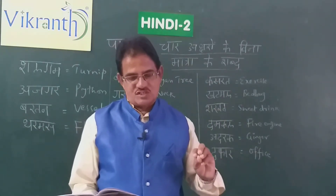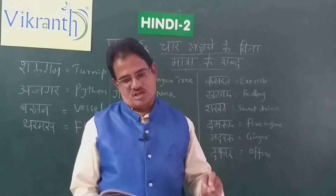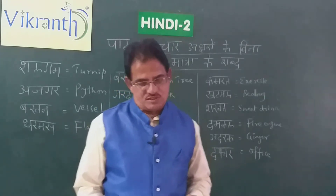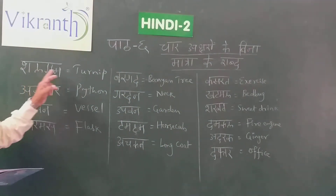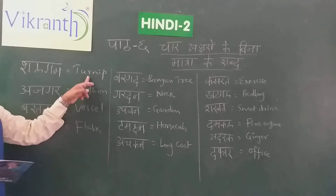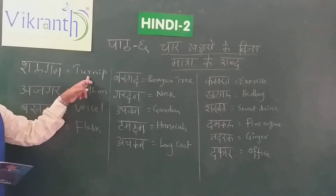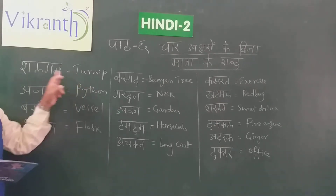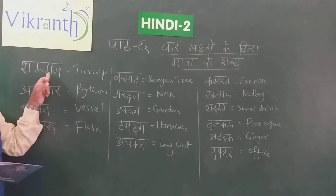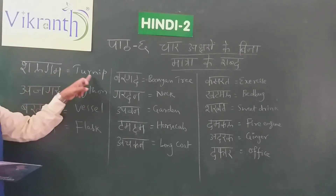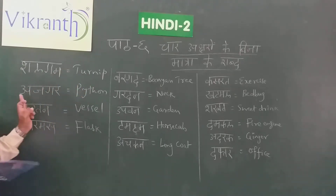Chaar Aksharon Ke Shabda — look at the pictures there. Shalgam — Turnip. It's the name of a vegetable. Shalgam means Turnip.